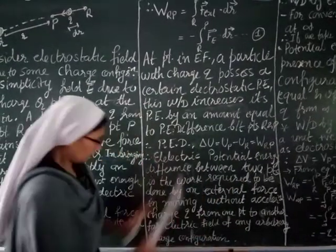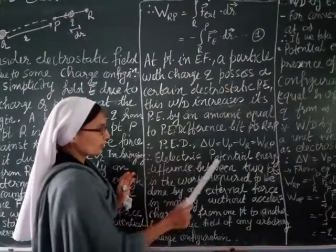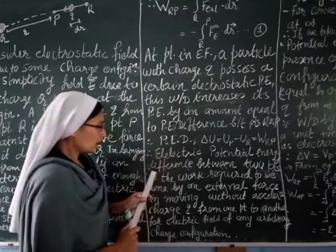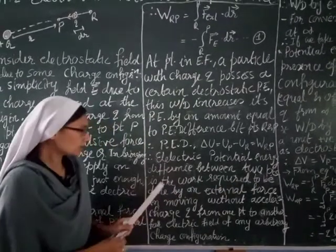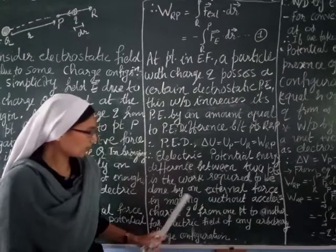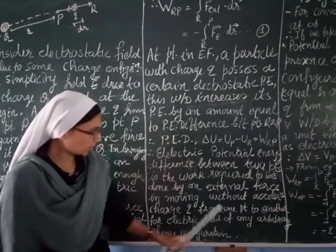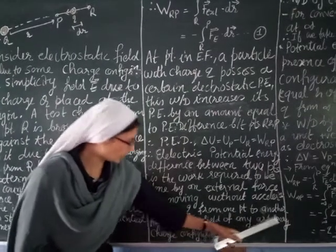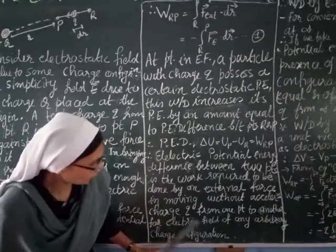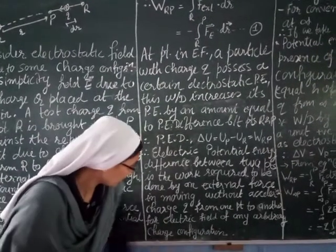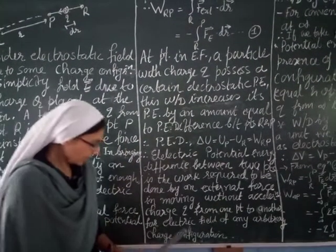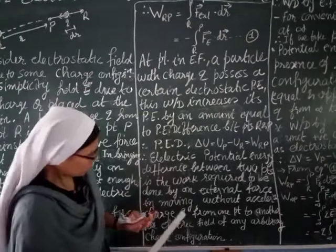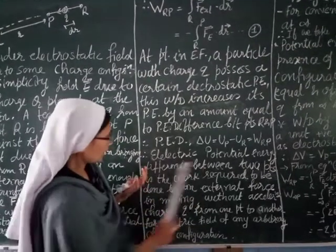Therefore, the electric potential energy difference between two points is the work required to be done by an external force, in moving — without acceleration — charge Q from one point to another point in the electric field of any arbitrary charge configuration.